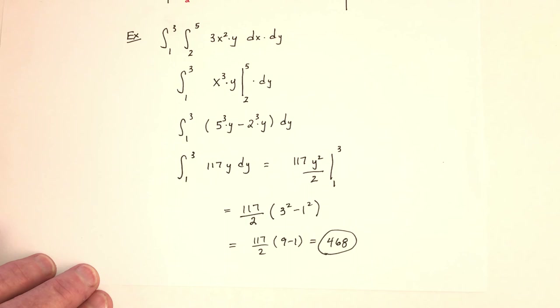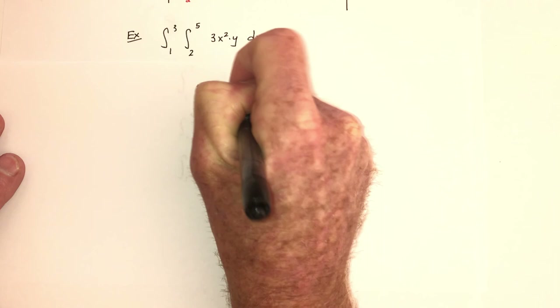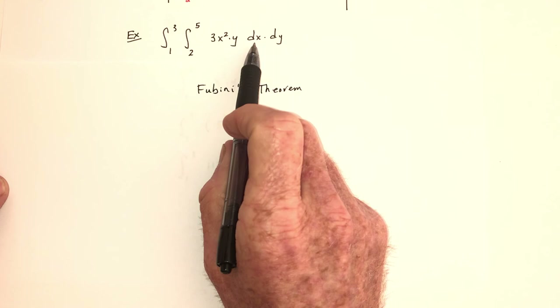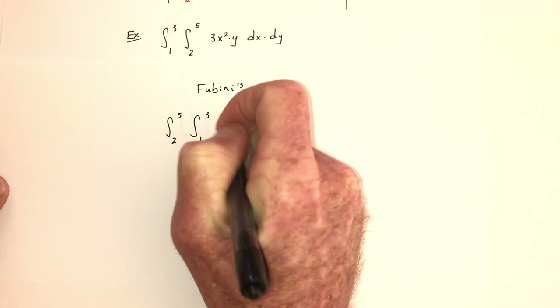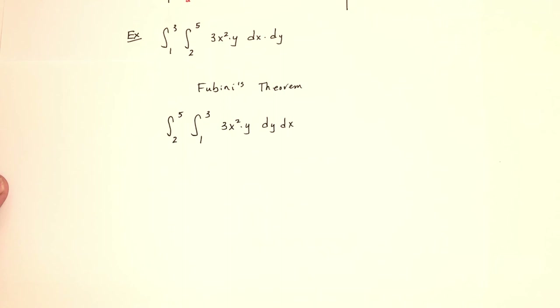Now I'm going to show you something that is extremely helpful with integrating. This is called Fubini's theorem. The name isn't extremely important, but in the homework they're going to refer to it - which theorem is it? It's Fubini's theorem. Fubini's theorem says that you can switch the order of integration. So I'm going to redo the problem: integrate from two to five, integrate from one to three, the same function, but now switch the order - go dy first and then dx. We should end up with the same answer, 468.